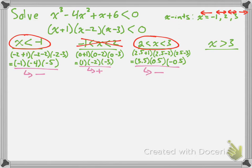Finally, for x > 3, let's try x = 4. Substituting: (4 + 1)(4 - 2)(4 - 3) = (5)(2)(1). We have three positive numbers, so the result is positive. Since we need the polynomial expression to be less than zero, this interval is not a solution to our inequality.